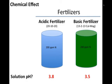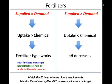So what's happening is that when supply equals demand, the plant uptake effect is greater than the chemical effect. You see a basic fertilizer increasing pH, a neutral fertilizer holding it, and an acidic fertilizer driving it down. But when you supply more fertilizer than is demanded, the uptake effect is overwhelmed by the extra fertilizer's chemical effect. In all cases, the substrate pH will then decrease. It's the greater chemical effect driving pH down when EC is too high.